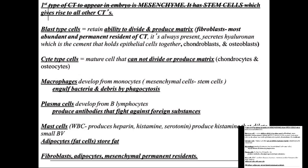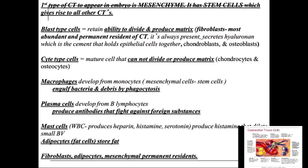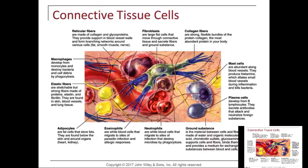Fibroblasts, adipocytes, and mesenchymal cells are permanent residents. Someone can have lipolysis or liposuction, but if their lifestyle doesn't change and they're still introducing toxins internally and externally, since fat cells come from mesenchymal cells, they can make more. In connective tissue, fibroblasts are large flat cells that move through connective tissue and secrete fibers and ground substance. Collagen fibers are very strong yet flexible bundles of the protein collagen — the most abundant protein in the body. Mast cells are very abundant along blood vessels; they produce histamine, which dilates small blood vessels during inflammation and can kill bacteria.